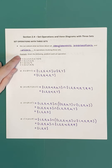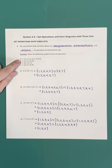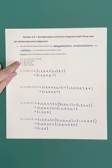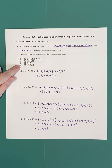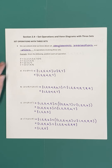Our universal set is all of the natural numbers from one to nine. Set A is the natural numbers from one to five. B is {2, 3, 6, 7}, and C is {3, 4, 7, 8, 9}. Notice and verify that A, B, and C are all subsets of the universal set — all of their elements can be found in the universal set. We can think of the universal set as the context for our problem.